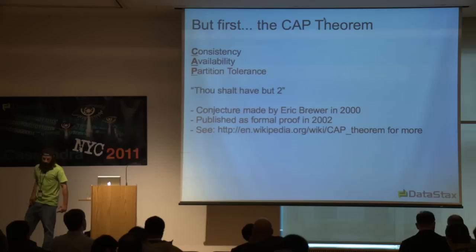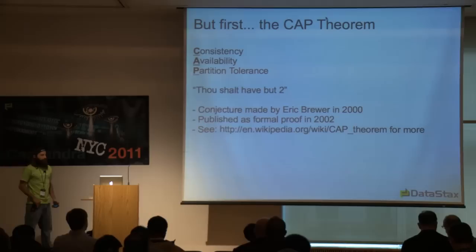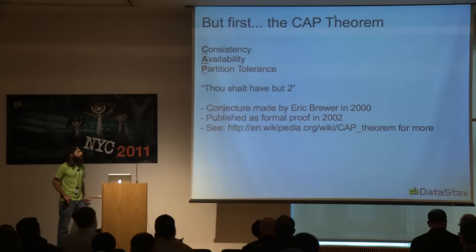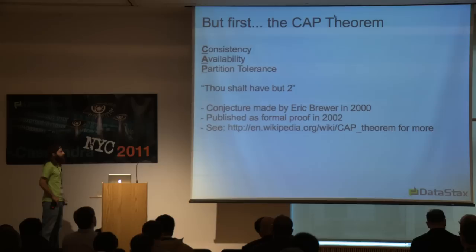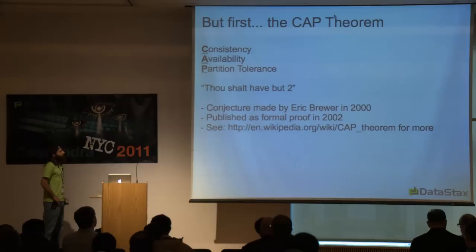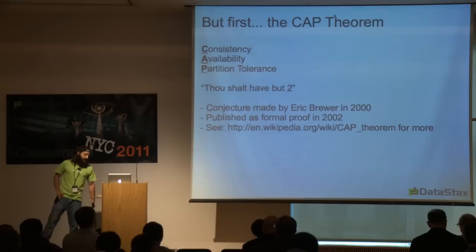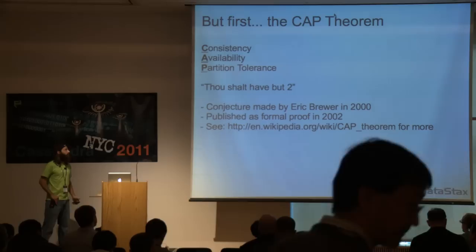One of the core tenets of distributed computing is the CAP theorem: when you build a big system, there are only two of three properties you can have — consistency, availability, and partition tolerance. This started as a conjecture made by Eric Brewer in 2000, was actually proved by a separate group, and became a theorem. Consistency means ACID and transaction isolation; availability means how quickly you can respond to requests; partition tolerance means how easily you go across network and trust boundaries — scale out, multiple data centers.